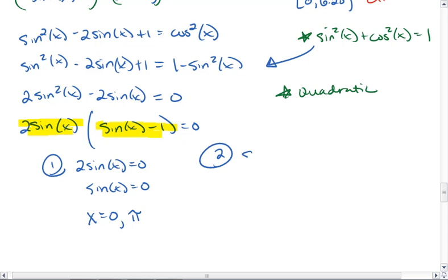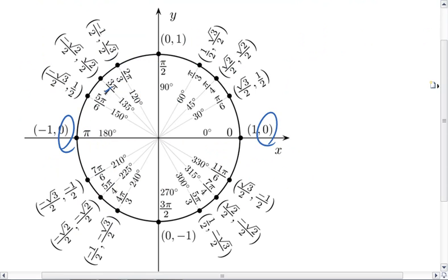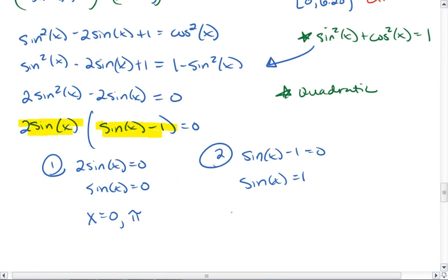For my second equation, sin(x) - 1 = 0. This gives me sin(x) = 1. Okay, this is our special situation. This is the one that only occurs once in the circle. And that's up here at π/2. We get π/2 for this answer.